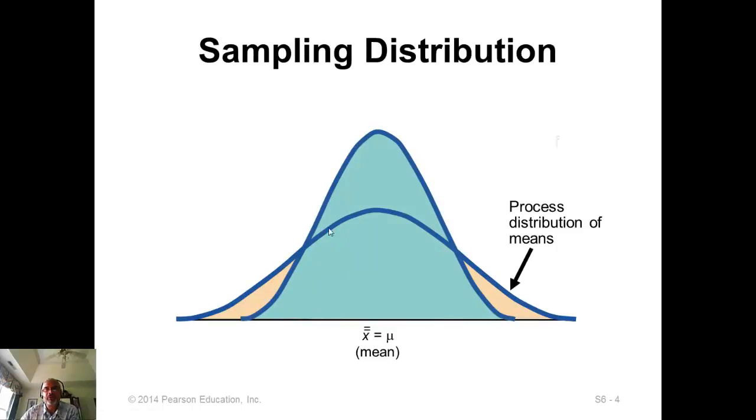So sampling distribution has smaller variance. This is the population distribution. If you compute sampling distribution, it will have smaller variance. And that's the reason why we take samples and compute sample means and use that in the process control charts.